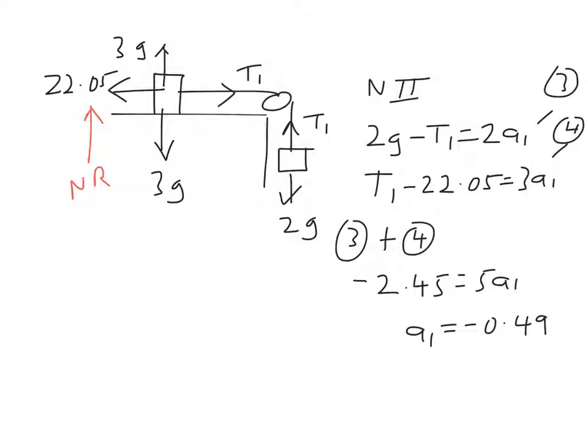In case you're not sure, this minus 2.45 comes from adding these equations. Minus t1 plus t1 is nothing. 2 times 9.8 is 19.6. 19.6 minus 22.05 is minus 2.45.